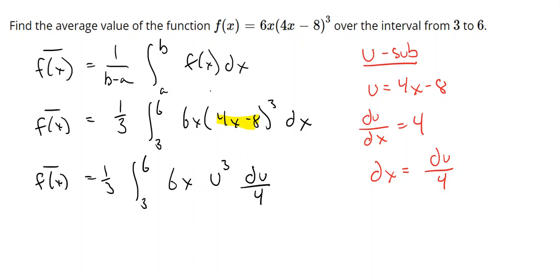Now the 6 and the 4 can be removed, but we still have this extra x. So this is one of those problems that we learned when we were doing u-substitution, where we have to do a little bit of extra work.